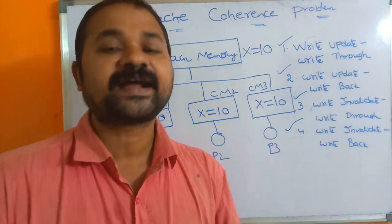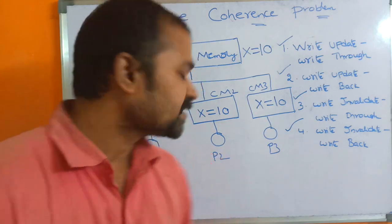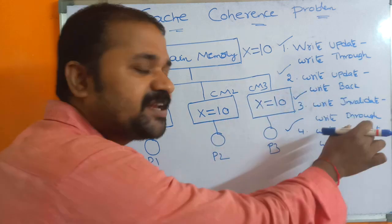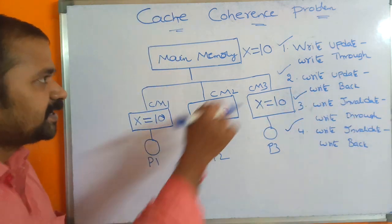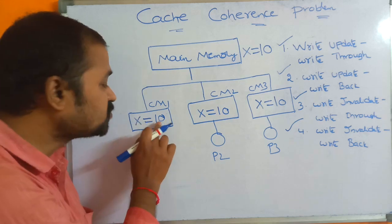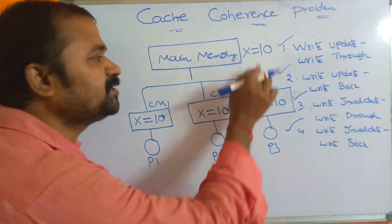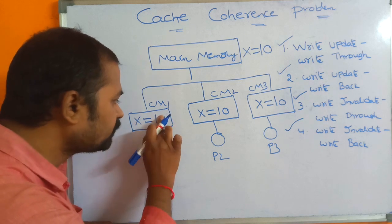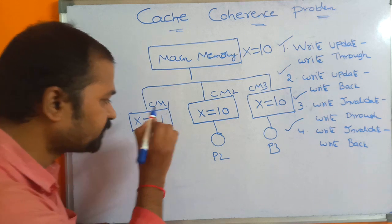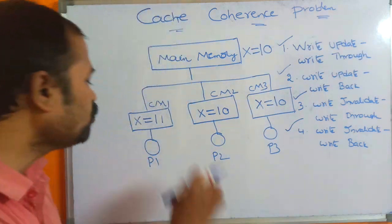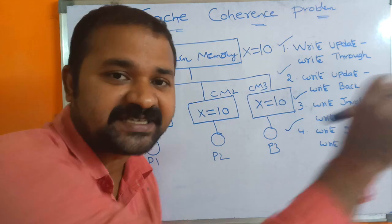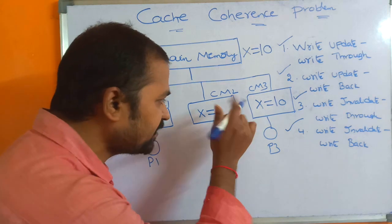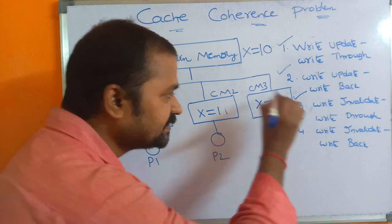Write update means if we update a value in cache memory, then the same value should be updated in other caches also. For example, here we have a variable X whose value is 10 in all cache memories. If processor P1 performs an incrementation, X becomes 11 in CM1. Write update means that other caches should also be updated to 11.